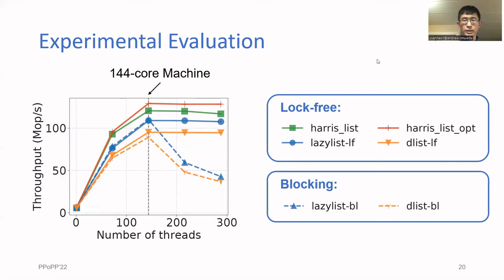Comparing the lock-free lazy list with the blocking version, we see that they are almost the exact same up until oversubscription. Then the lock-free version becomes more than two times faster.